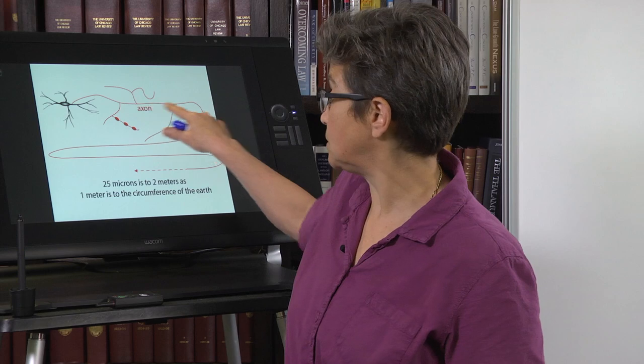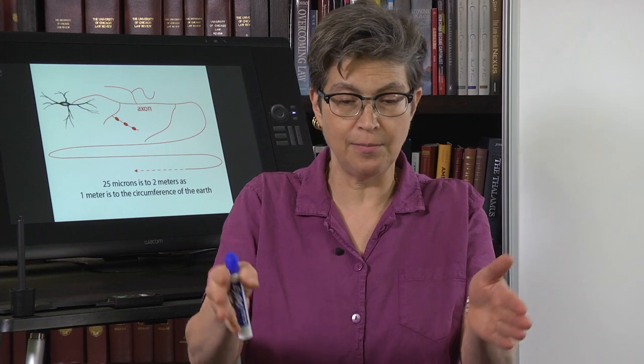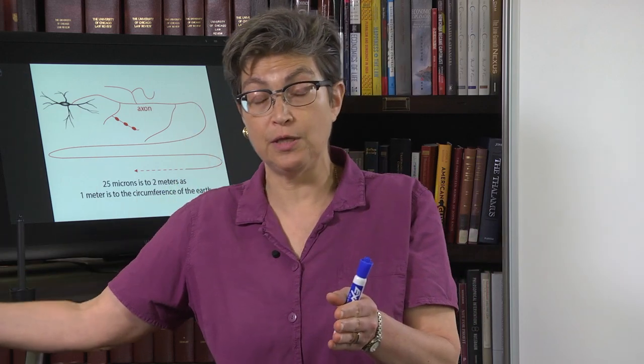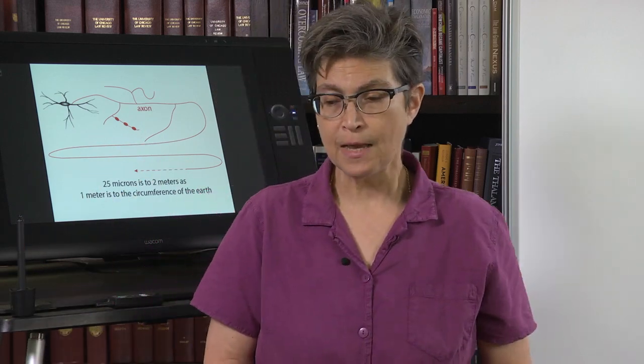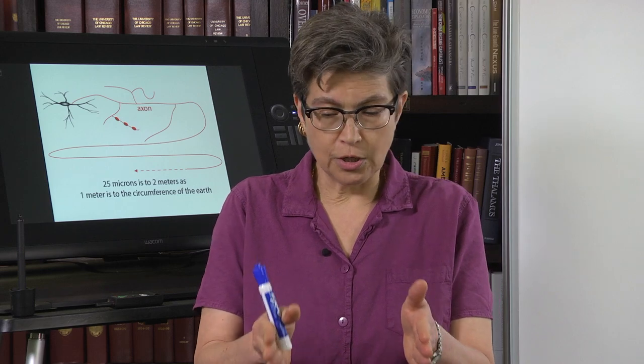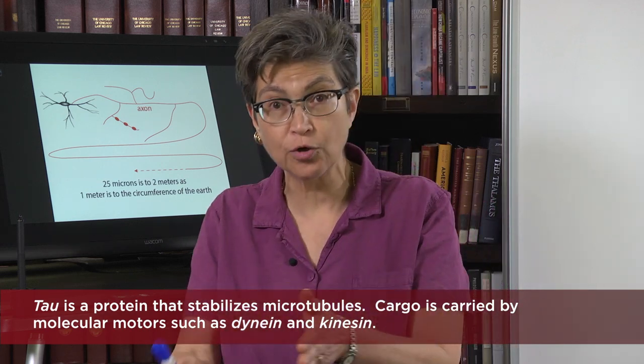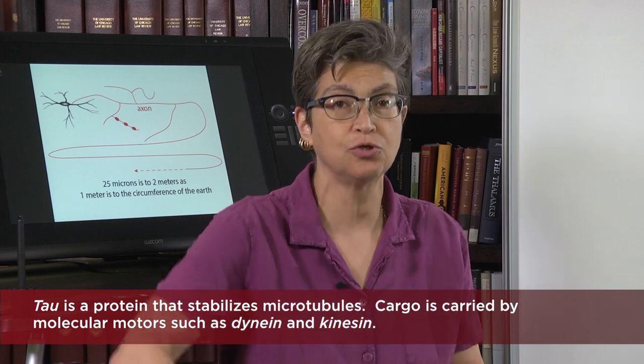Axonal transport happens down the axon and includes microtubules forming lanes. The microtubules form different lanes at different times. Transport goes both in the forward direction — the anterograde direction — and in the backward direction, retrograde. So garbage is going retrograde, and new vesicles of neurotransmitter are going anterograde. The microtubules are instructed by a molecule called tau, T-A-U. Tau forms and unforms new lanes, and it directs the axonal transport traffic.